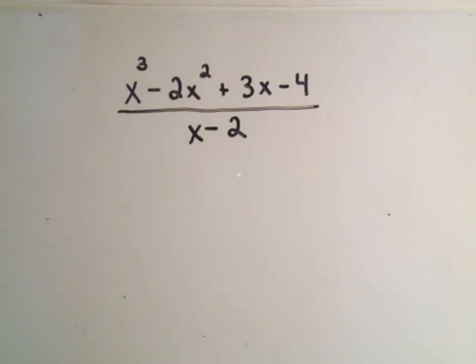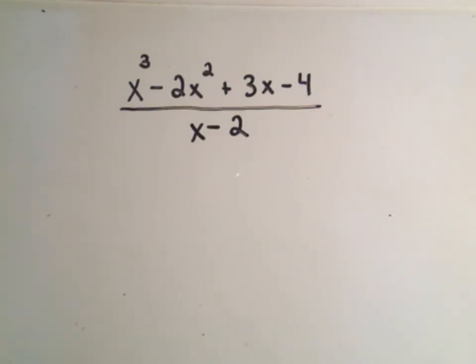So suppose we want to divide x cubed minus 2x squared plus 3x minus 4. We're going to divide that by x minus 2.